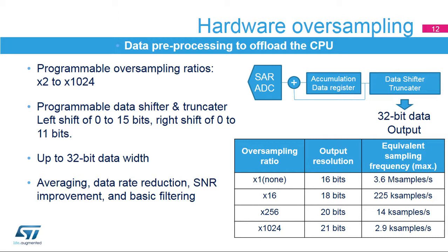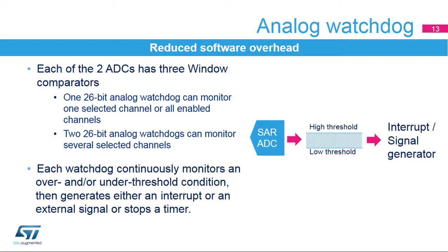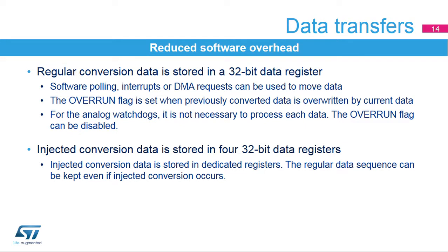Each ADC has an integrated analog watchdog with high and low threshold settings. The ADC conversion value is compared to this threshold window. If the result exceeds the threshold, an interrupt or external signal can be generated, or a timer can be immediately stopped without CPU intervention. The ADC conversion result is stored in a 32-bit data register. The system can use CPU polling, interrupts, or DMA to make use of the converted data. An overrun flag can be generated if data is not read before the next converted data is ready.